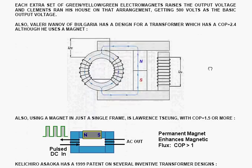Also, Valery Ivanov of Bulgaria has a design for a transformer which has COP of 2.4, although he does use a magnet. There's the magnet, and he has an air gap there in the frame, so it's not a continuous path. And the magnetic flux has to flow across that air gap there.